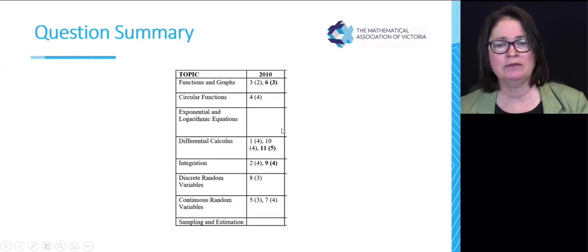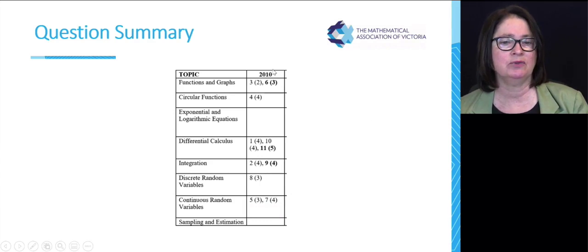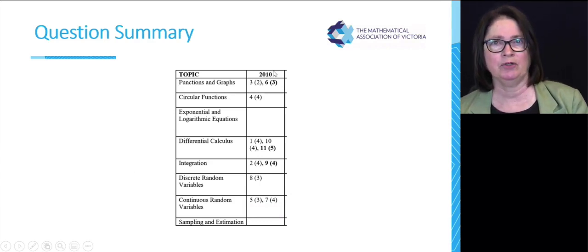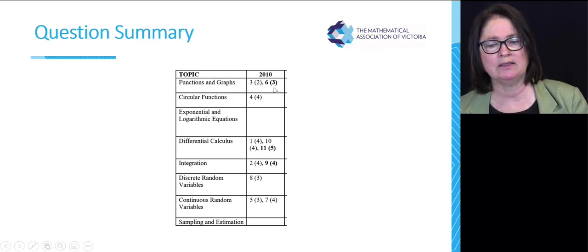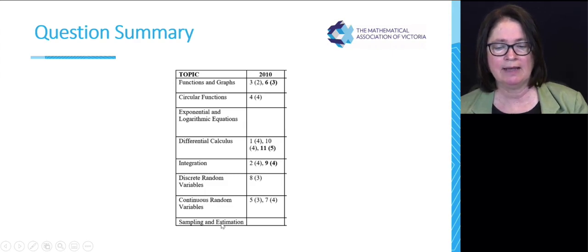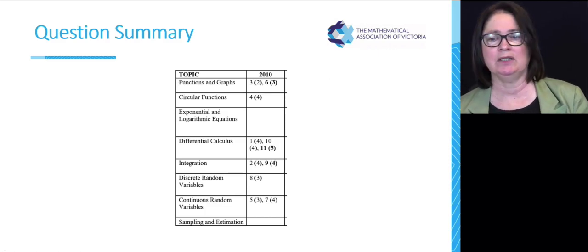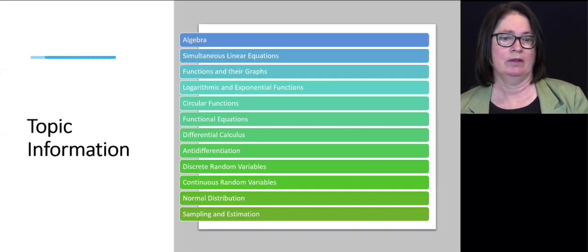What we've done for you, you'll find on one of your pages, we've done a question summary for exam one and for the multiple choice section. The questions in bold are where students, less than 50% of students manage to get them right. So they're the harder questions. The other ones, we've just put them into the different categories. Now sampling and estimation only came in in 2016, so you'll only see questions from 2016 onwards. But we've got a lot of years there. We've gone from 2010 to 2021 in your booklet.